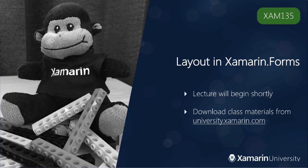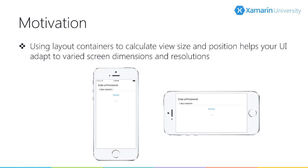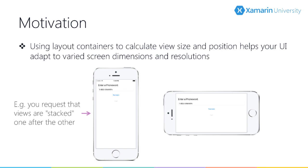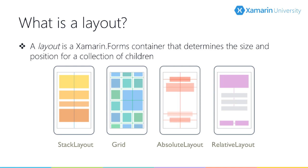This is XAM135, Layout in Xamarin Forms. When you're doing layout of your views, it's tedious to calculate the size and position of everything on your own. It's much easier to say something high level, like, please arrange my views in a single column and automatically resize them whenever the device rotates. To do that kind of service, Xamarin Forms has four layout panels that come in the box.